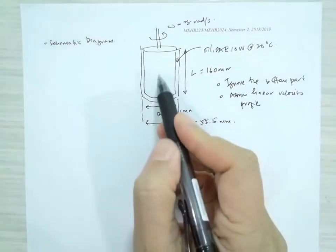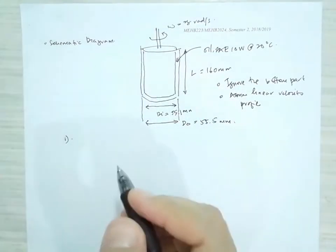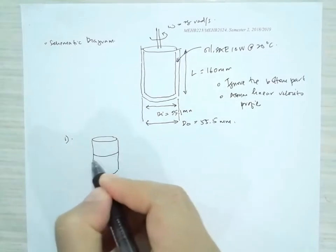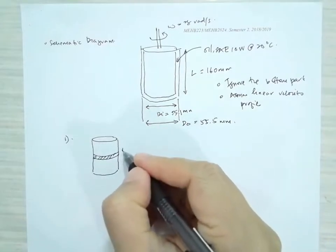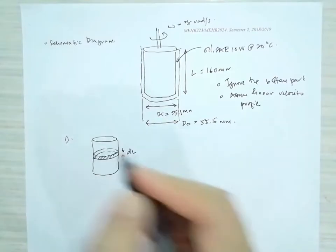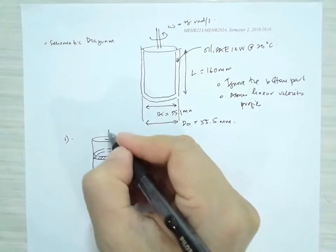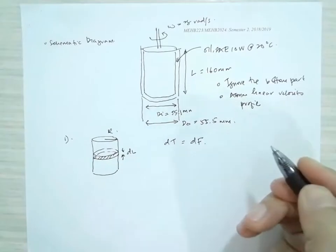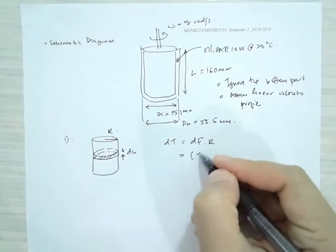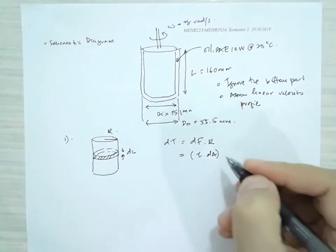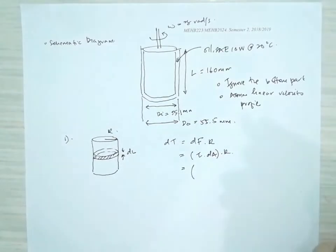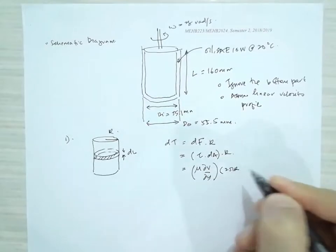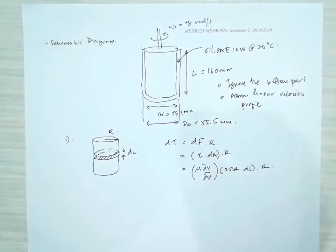For the first part, we calculate the torque generated on the surface. Considering an elemental strip on the cylinder of height dL and radius R, the torque is equal to the force multiplied by R. The force equals tau multiplied by dA, so torque equals tau times dA times R. By Newton's law of viscosity, tau = mu × dv/dy, and the area dA = 2πR × dL, so torque = tau × 2πR × dL × R.